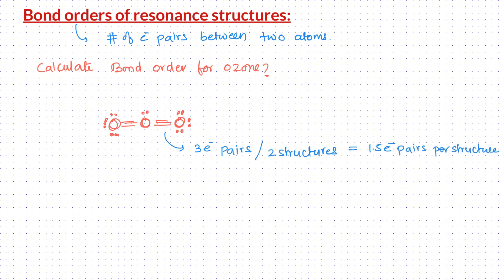So, for each structure, on average, there is 1.5 electron pairs, which is the bond order for the right bond. And you can do the same thing for the left bond as well. We will get the same bond order of 1.5. And that is why the experimentally determined bond lengths are the same.